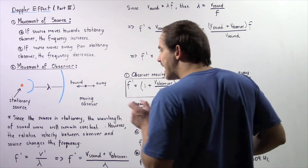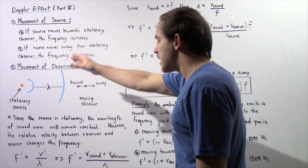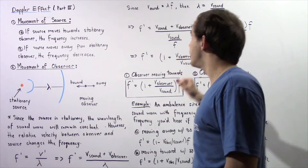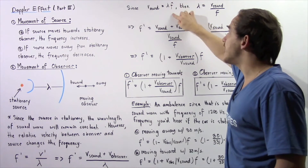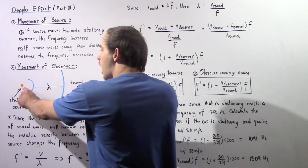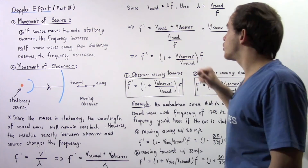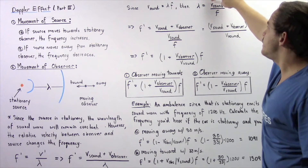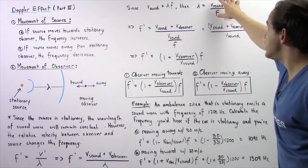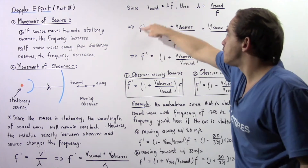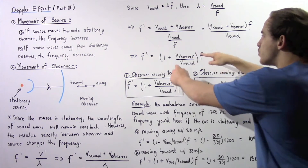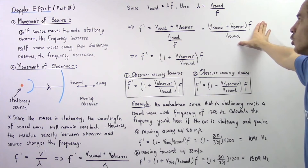Let's suppose the observer is moving towards the sound wave, so the velocity is positive. Because the velocity of sound depends only on the medium, v_sound equals lambda times f, where f is the original frequency when both objects are stationary. Rearranging, lambda equals v_sound divided by f. Substituting this expression for lambda into the denominator, f' equals the relative velocity divided by v_sound divided by f, so the frequency goes on top and we rearrange to find the formula.